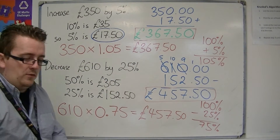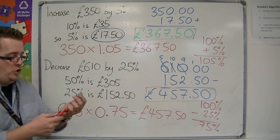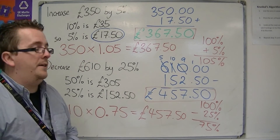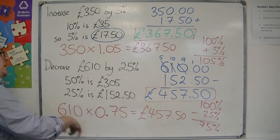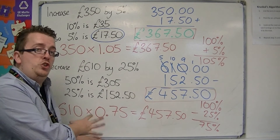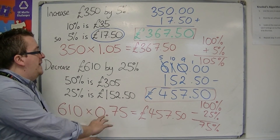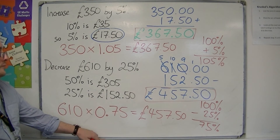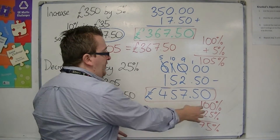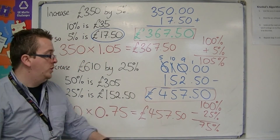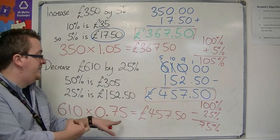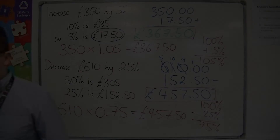This allows you to do percentage increase and decrease very quickly using a calculator. For the decrease, multiplying by 0.75 is usually where the main difficulties lie. Just think of it as having 100% and taking away a percentage, then turning that resulting percentage into the decimal that you need.